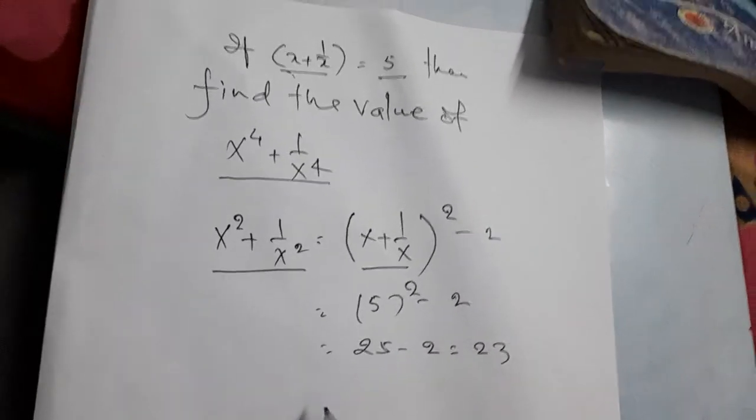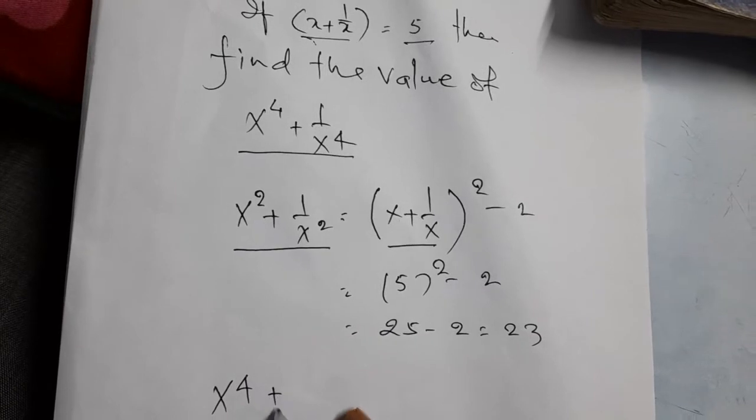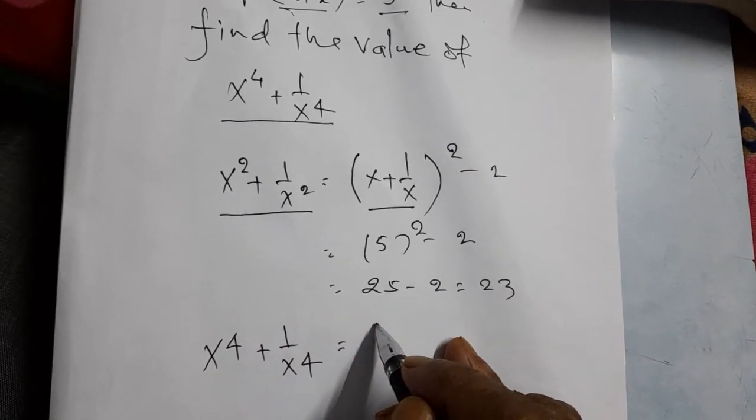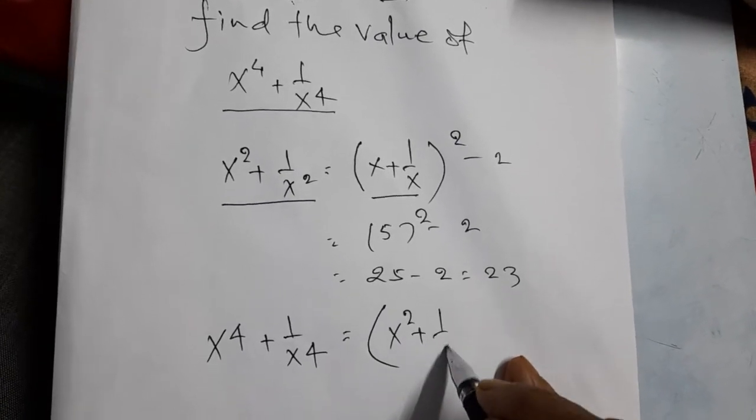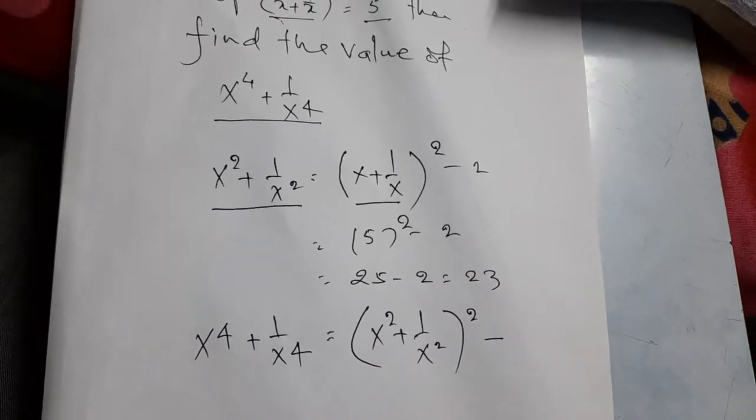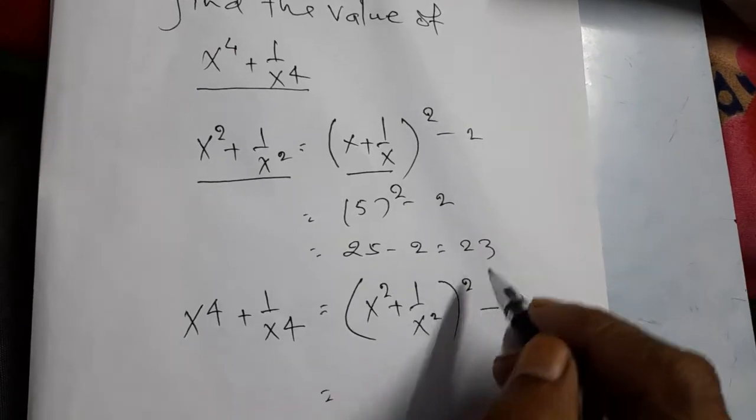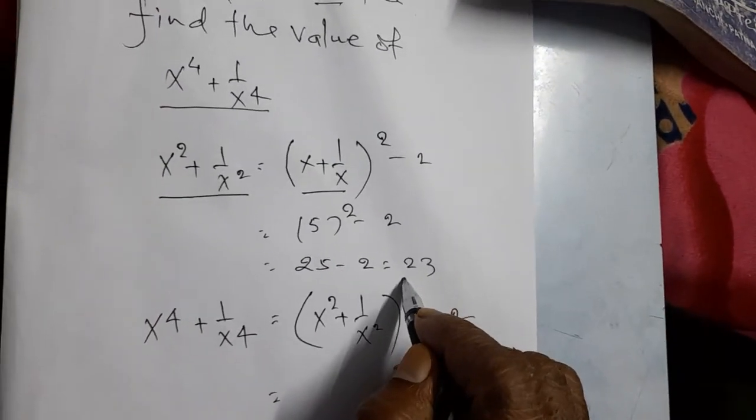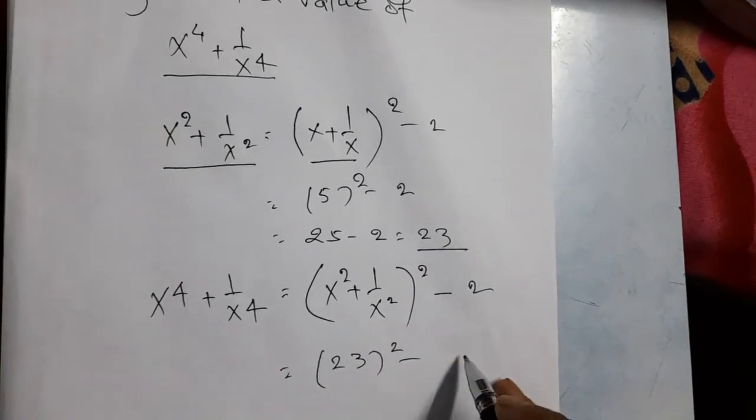Now you have to find the value of x power 4 plus 1 by x power 4, which is equal to x square plus 1 by x square whole square minus 2 again. The value of x square plus 1 by x square is 23, so it will be 23 whole square minus 2.